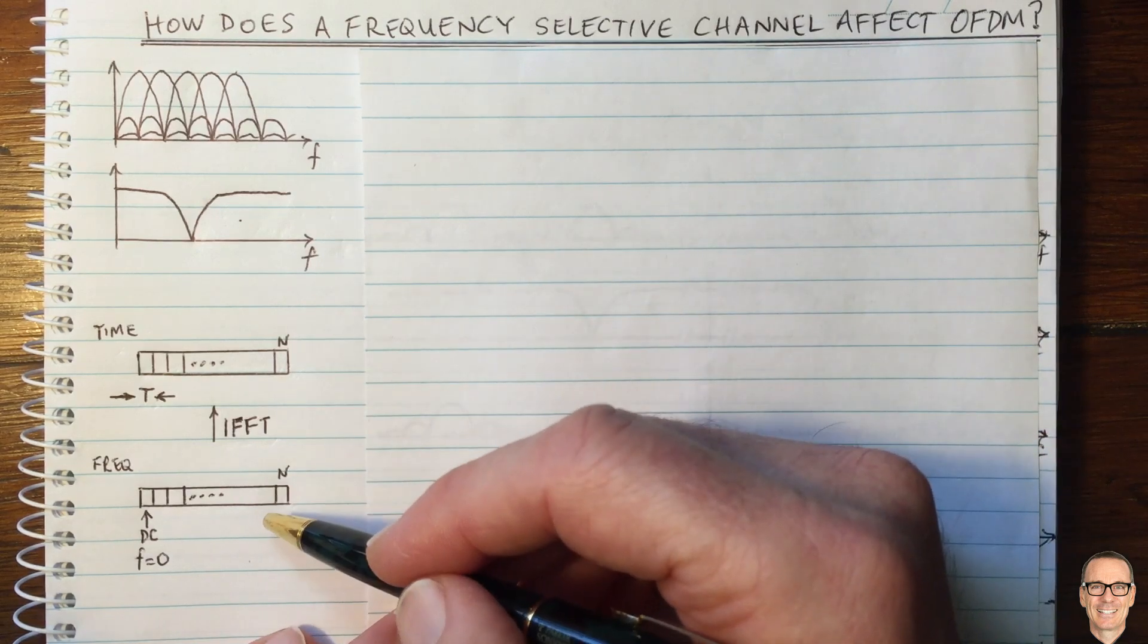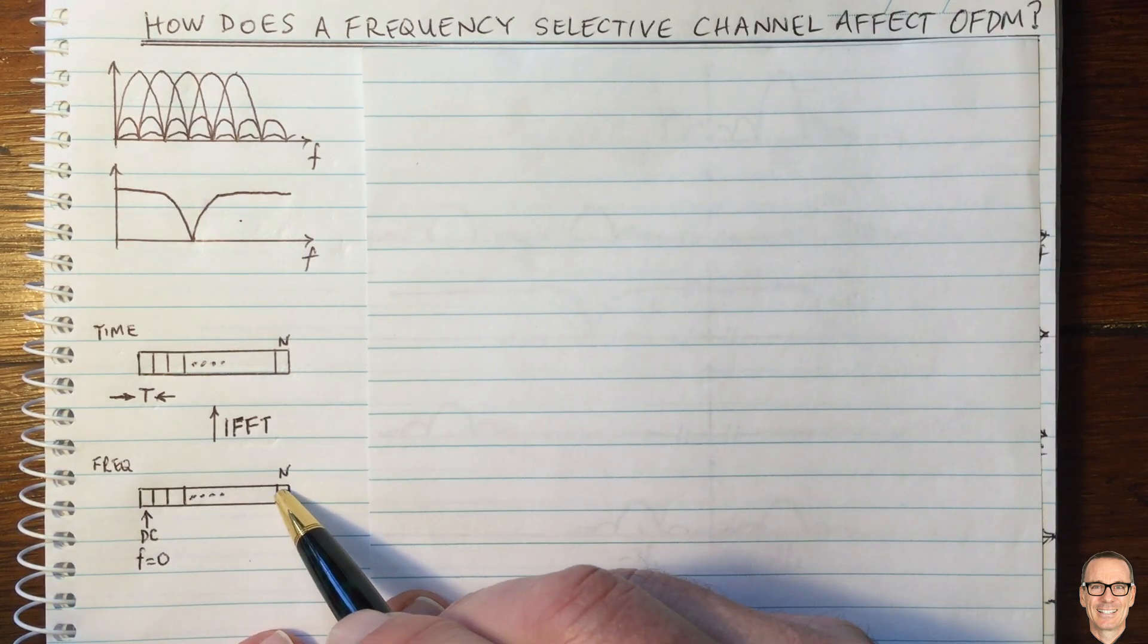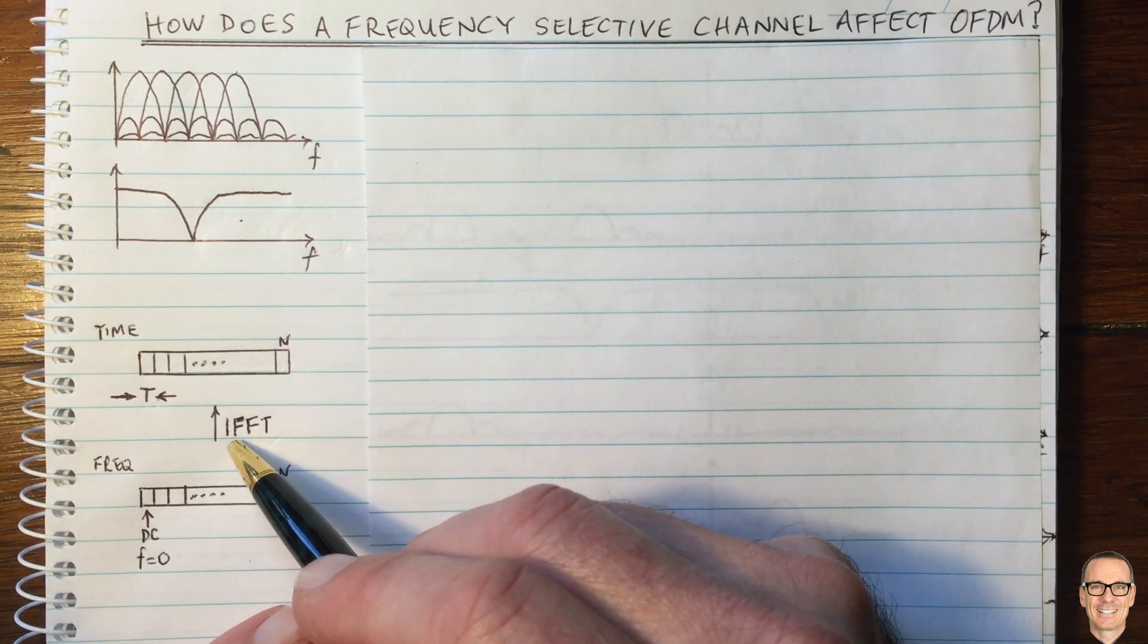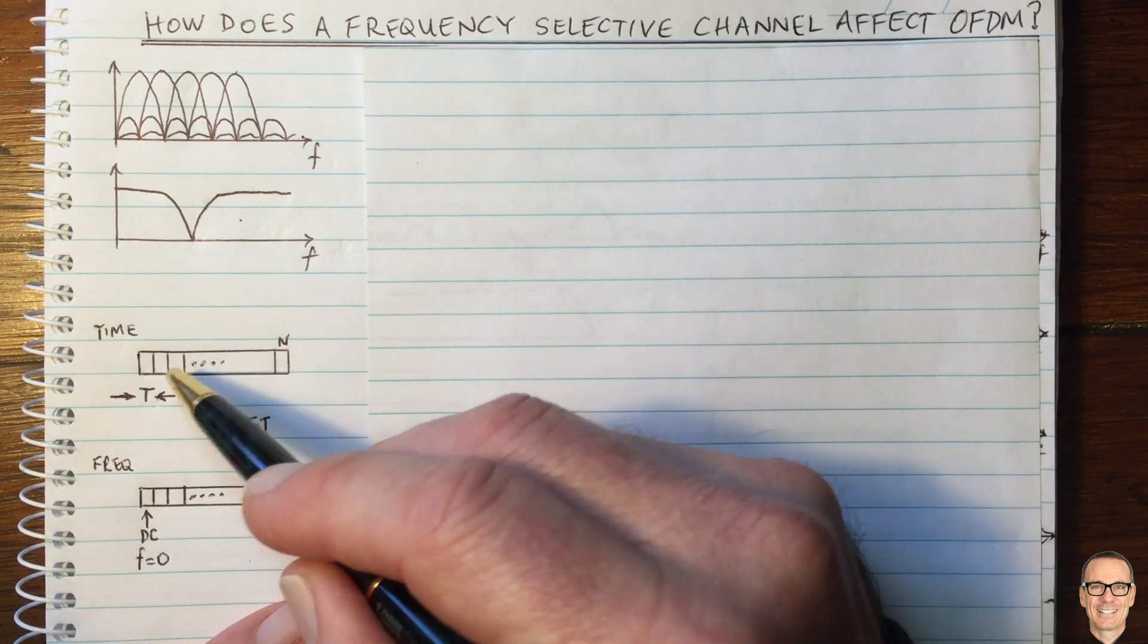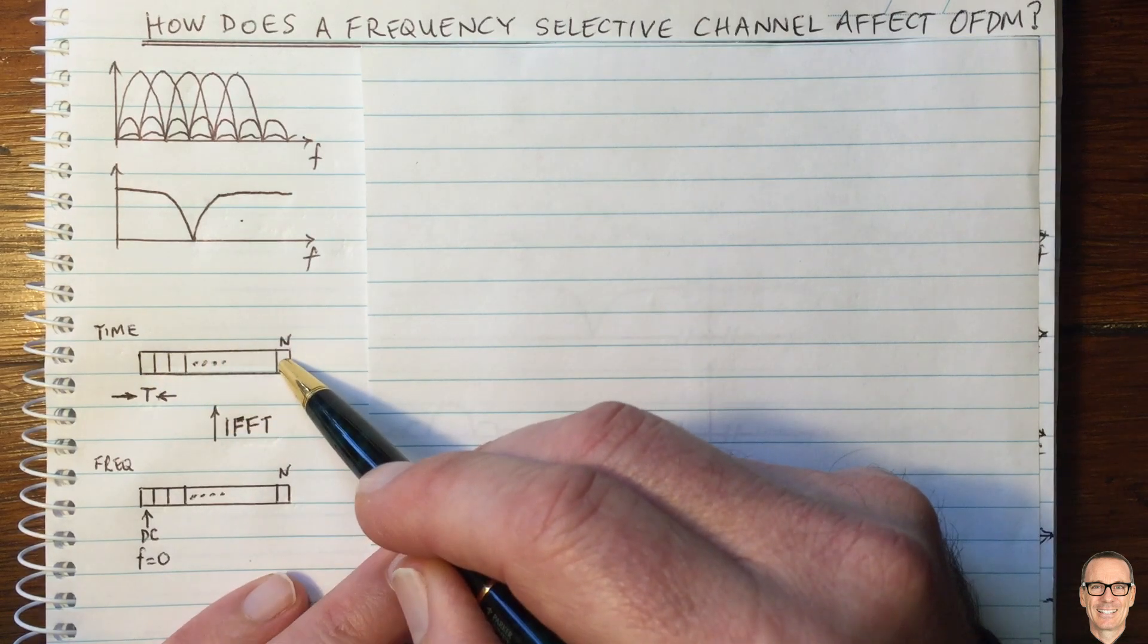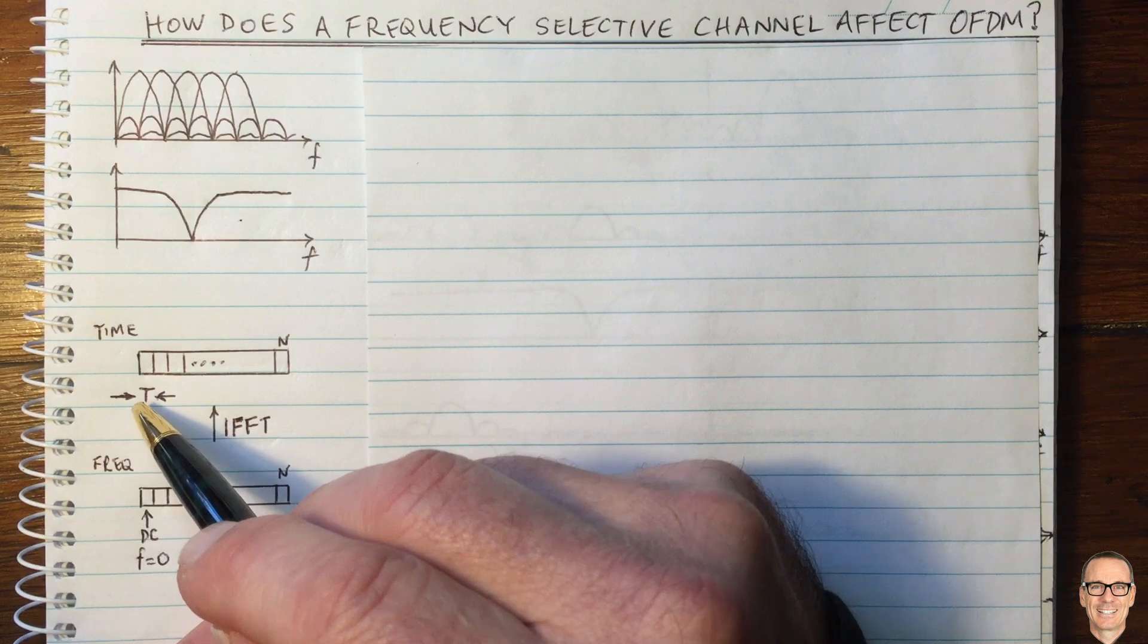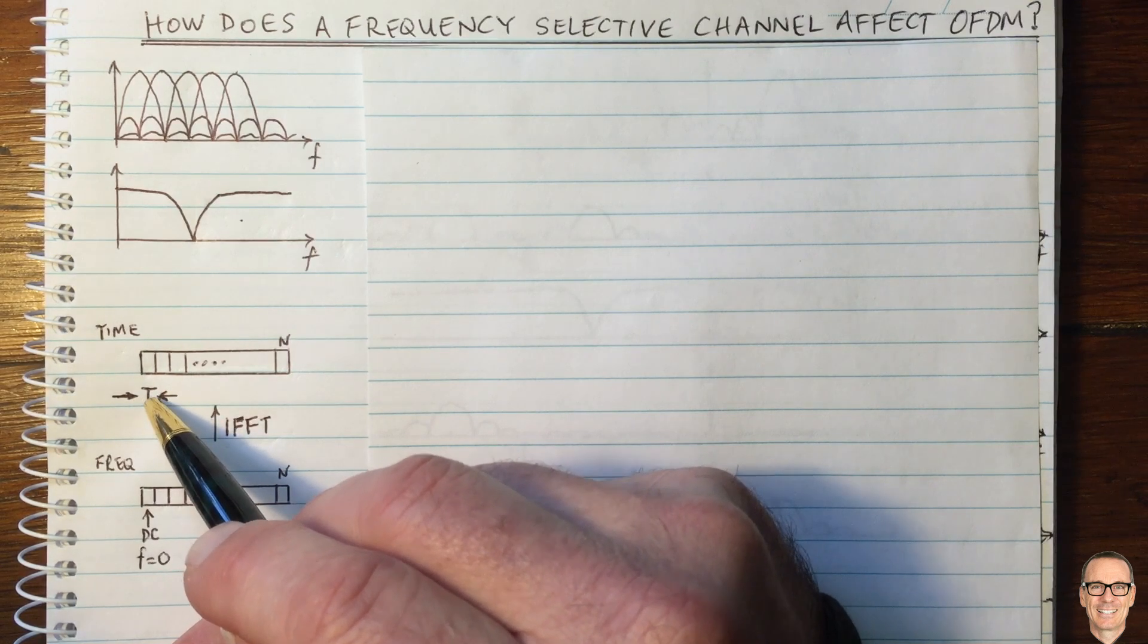An OFDM symbol is generated by putting data into a sequence and then performing an inverse fast Fourier transform. This gives us another sequence which we can send in the time domain. We clock out each of these values in the sequence over a short period of capital T.